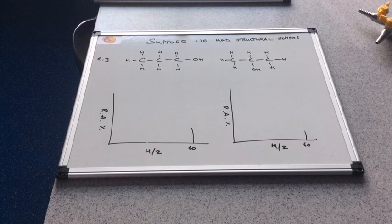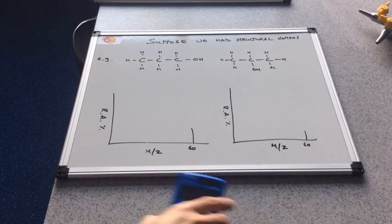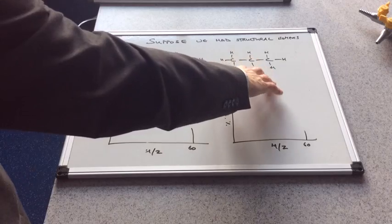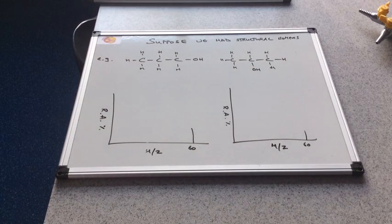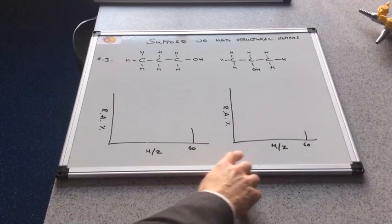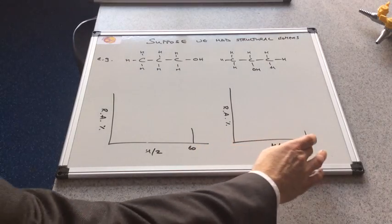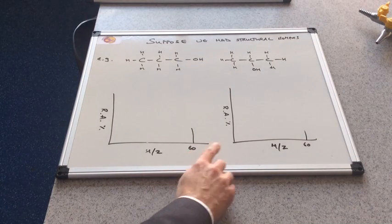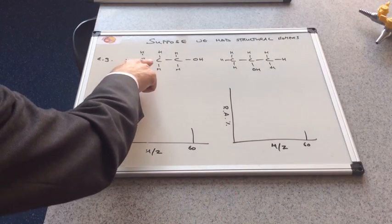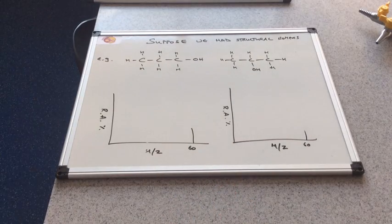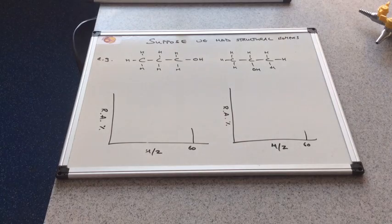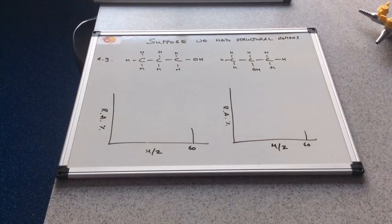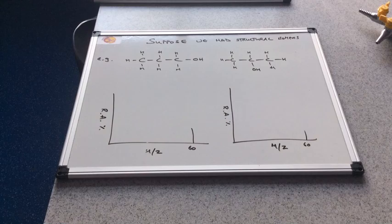We'll finish off with a very typical exam type question. Suppose we had structural isomers: propan-1-ol and propan-2-ol. We're going to look at how the mass spectra of these would differ. The problem we've got is they've both got the same mass because they've got the same number of carbons, hydrogens, and oxygens. So they both have a molecular ion peak at 60. Remember that's due to the loss of an electron from the original molecule.